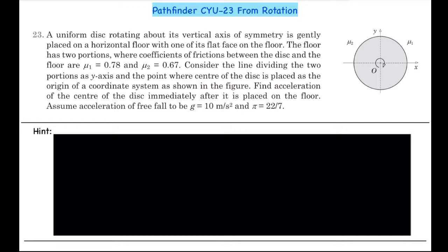Find acceleration of the center of the disc immediately after it is placed on the floor. Assume acceleration of free fall to be g equals to 10 meter per second square and pi equals to 22 over 7.